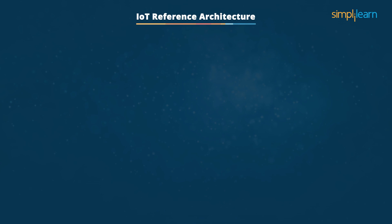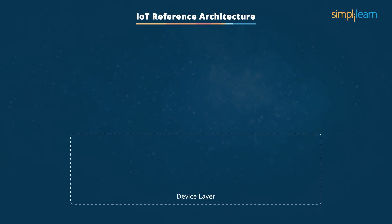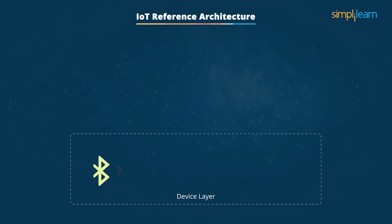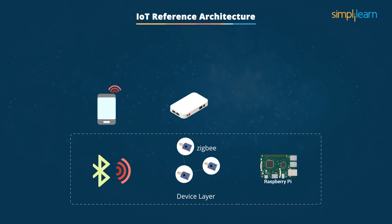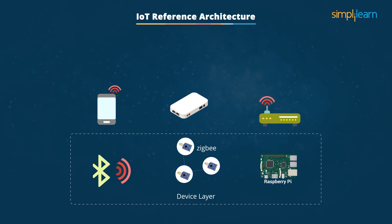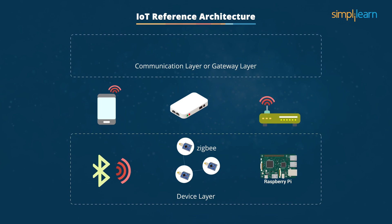IoT Reference Architecture. The device layer is the main component where there are various devices like sensors that are interconnected. Some examples are Bluetooth connected via mobile phone, and Zigbee via Zigbee gateway. Other devices include the Raspberry Pi, connected to the Ethernet via Wi-Fi. This is directly connected to the communication layers, which are part of the second layer.